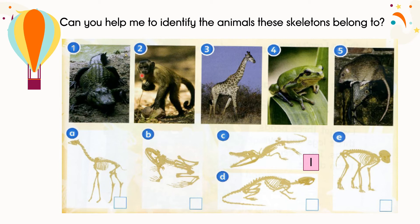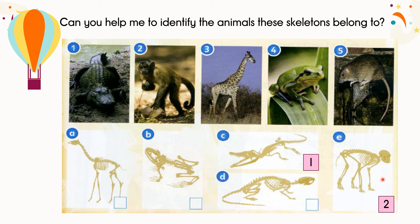How about the second animal? What animal is this? It's a monkey. Which picture shows the skeleton of the monkey? Well done. It is E. How about picture number three? What animal is this? It has a long neck and lives in the safari — you can see it in the zoo. Yes, it's a giraffe. Which skeleton picture is the giraffe's skeleton? Well done. It's number A.